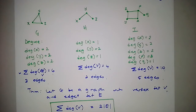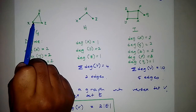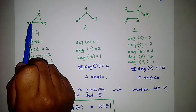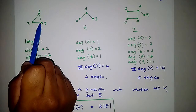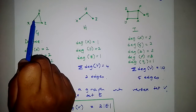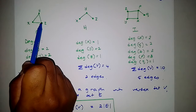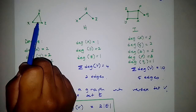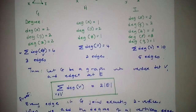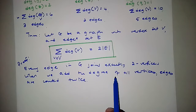Let me briefly illustrate this. When we look at the degree of vertex X, we said it's 2 because it is adjacent to vertex Y and vertex Z — so we count the edge XZ. Then when we look at the degree of vertex Z, we count that same edge again. That is what we mean when we say edges are counted twice when summing the degrees of all vertices.